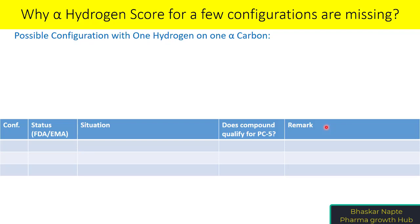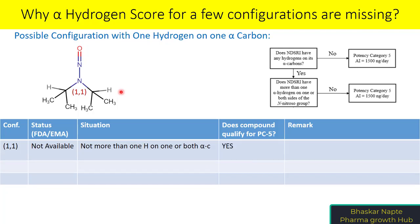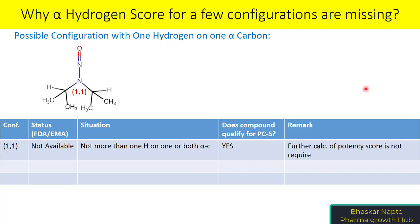Now for configurations with one hydrogen on one alpha carbon: the first possible is 1,1 — one hydrogen on each alpha carbon. Does this compound fall under potency category 5? Yes, it does — via the second question in the flowchart. As it falls under potency category 5, there is no further need to calculate the potency score, and hence the alpha hydrogen score is not required. Therefore, FDA and EMA have not provided the alpha hydrogen score for the 1,1 configuration.